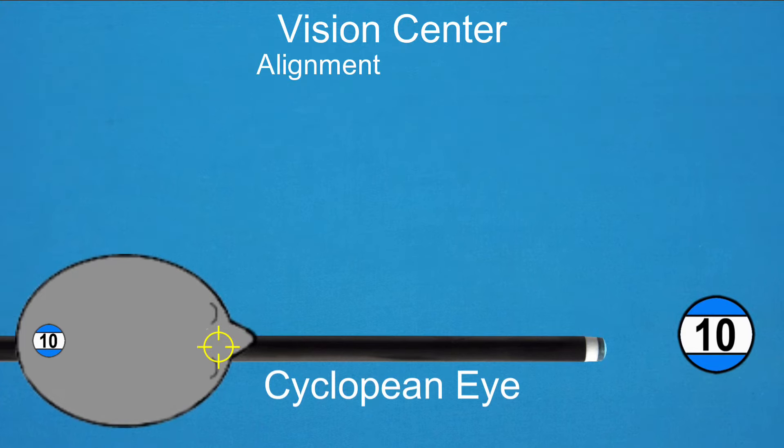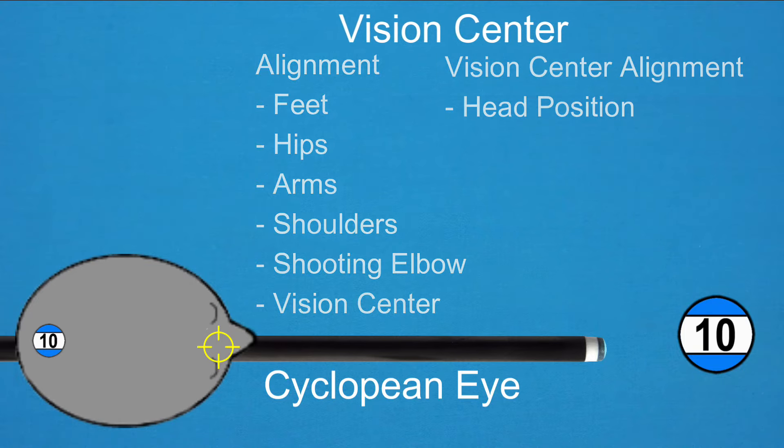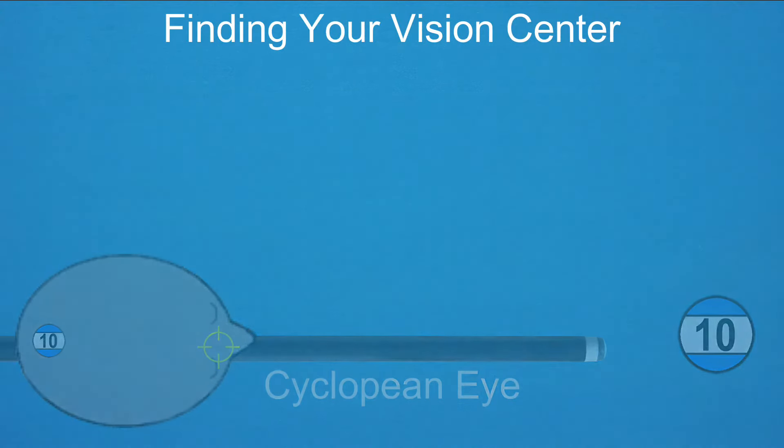Shooting straight involves proper alignment of your feet, hips, arms, shoulders, shooting elbow, and vision center. Your vision center alignment involves your head position while shooting. But before working on that alignment, you need to find your own unique vision center.